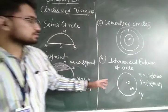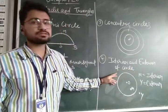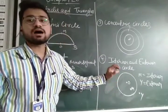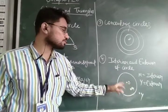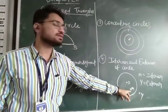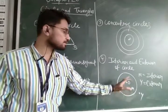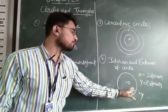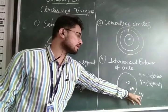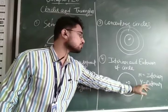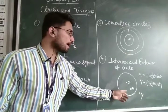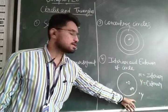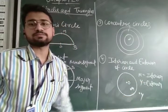Now the next topic is interior and exterior of the circle. The point which comes under the closed curve of the circle is known as an interior point, and the point which comes outside the boundary of the circle is known as an exterior point. So M is the interior point of the circle and Y is the exterior point of the circle.